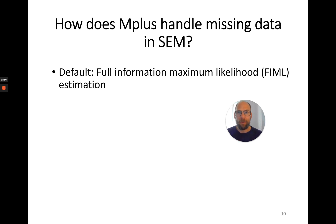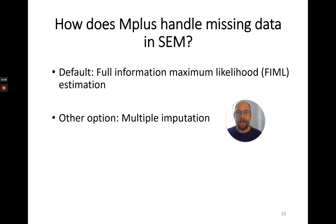A little later I'll give you some tips on how you can improve the estimation with full information maximum likelihood in cases where you may not be meeting the missing at random assumption that FIML requires, so stay tuned for that. Now, full information maximum likelihood estimation does not impute missing scores. It leaves your data set with the missing scores but takes all the information into account from all cases.